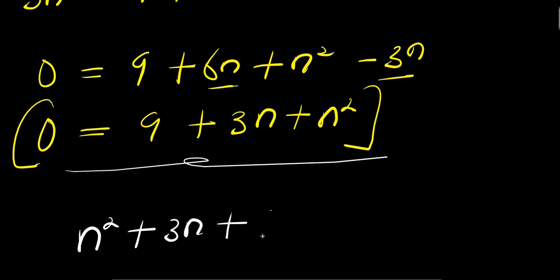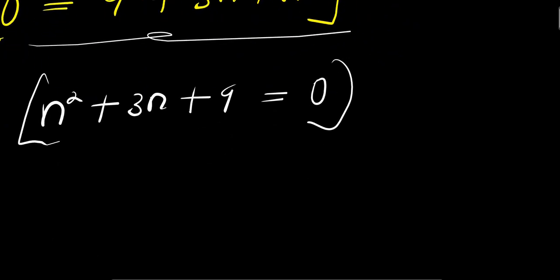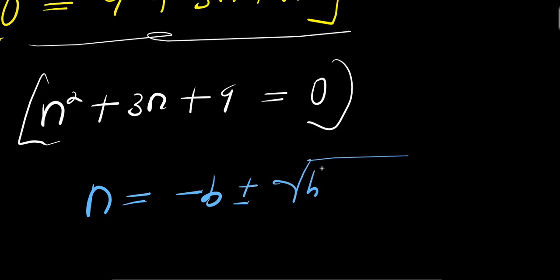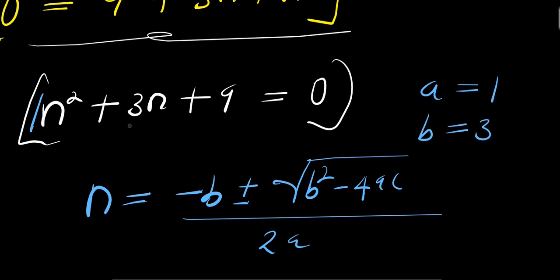Rearranging, we have n squared plus 3n plus 9 equals 0. We solve this using the quadratic formula. We have n equals negative b plus or minus square root of (b squared minus 4ac) divided by 2a. Our a equals 1, b equals 3, c equals 9.